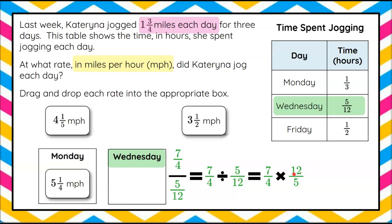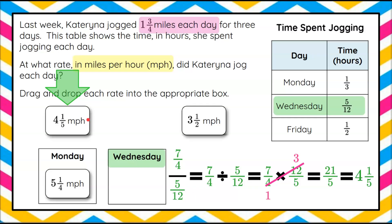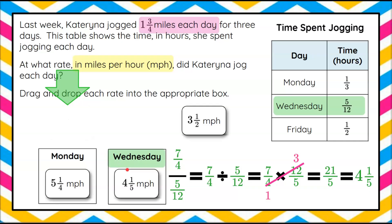Now we multiply numerators and denominators. Seven times twelve is a big value, but I see common factors: four and twelve are both divisible by four. So twelve divided by four is three, and four divided by four is one. Now we have a simpler problem: seven times three is twenty-one, and one times five is five — twenty-one-fifths. Five goes into twenty-one four times with one left over, so four and one-fifth miles per hour. We drag and drop that over to Wednesday.